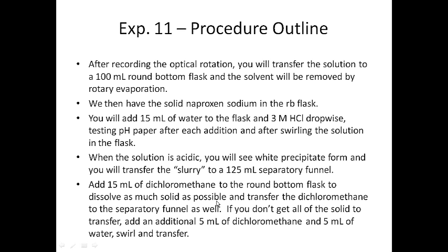Once the solution is acidic, you should see a white precipitate form, making a slurry. Transfer the slurry to the 125-milliliter separatory funnel. Add 15 milliliters of dichloromethane to the round-bottom to dissolve as much solid as possible, then transfer that DCM to the separatory funnel as well. If solid remains in the round-bottom, add 5 mL DCM plus 5 mL water, swirl, and transfer — any solid left behind will be a source of error.